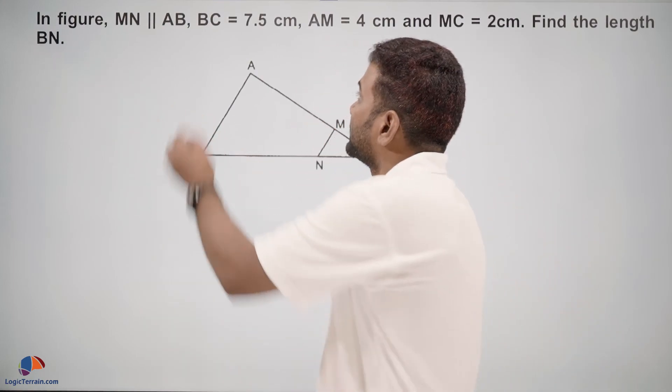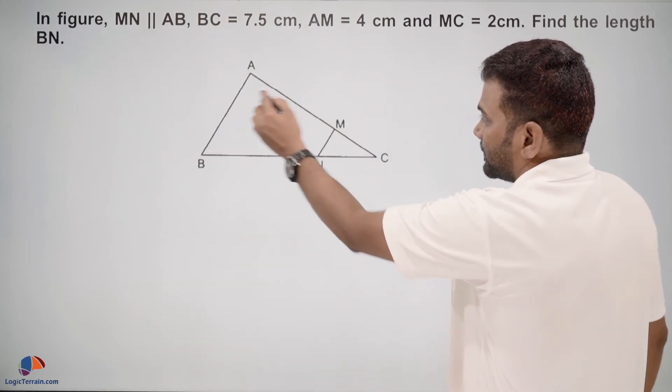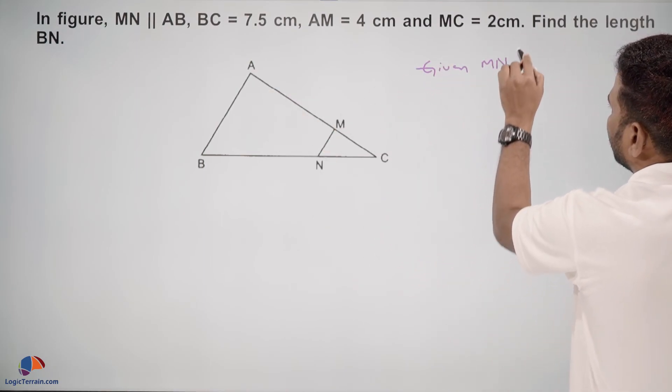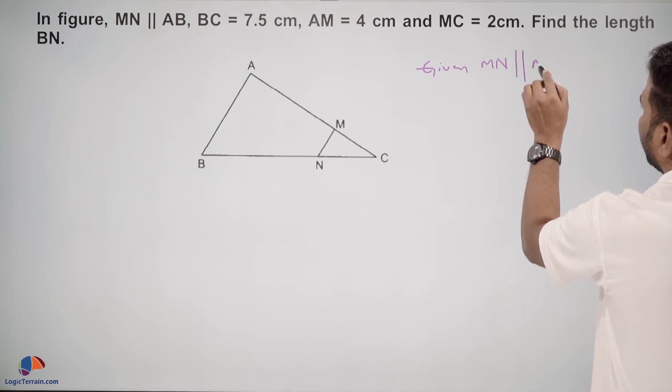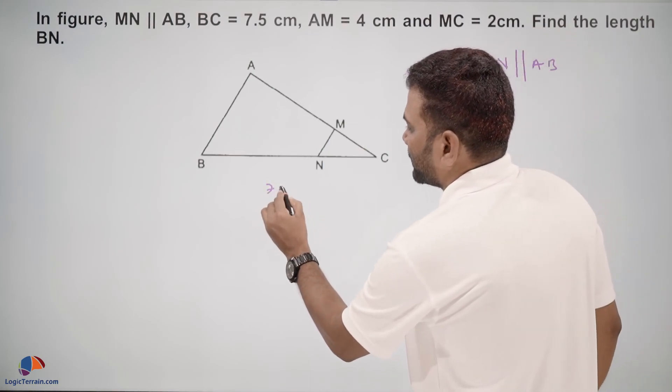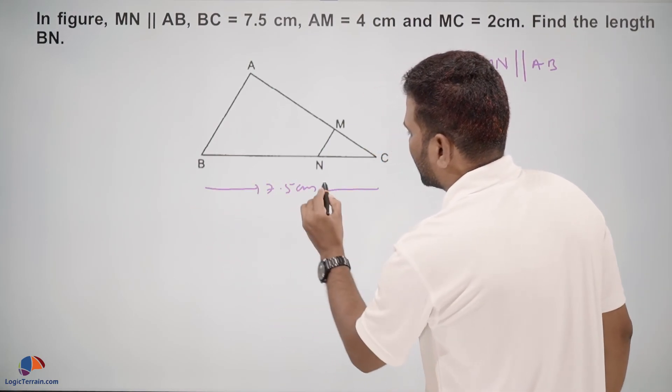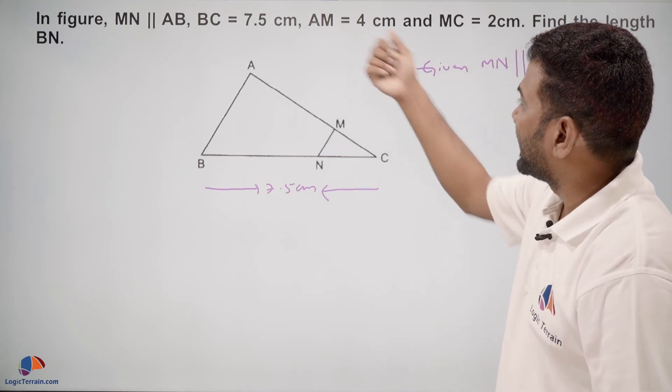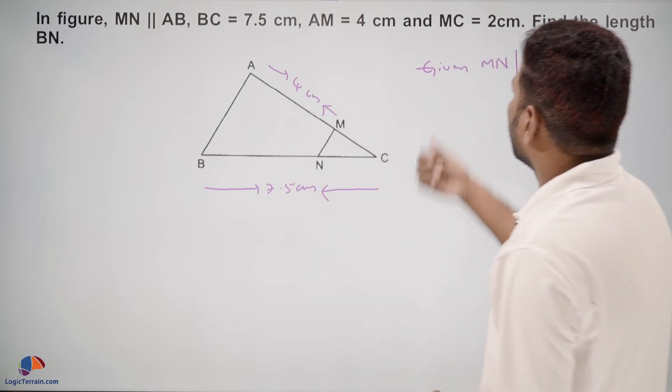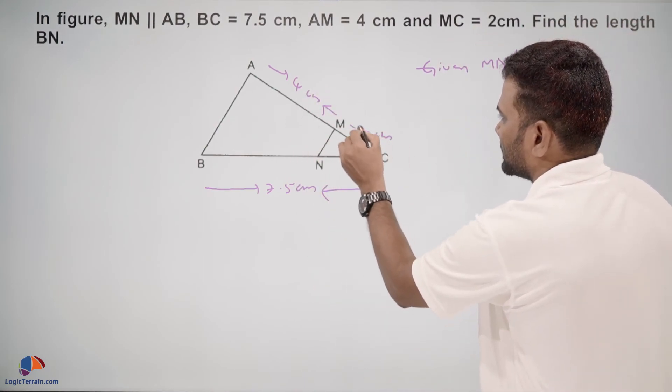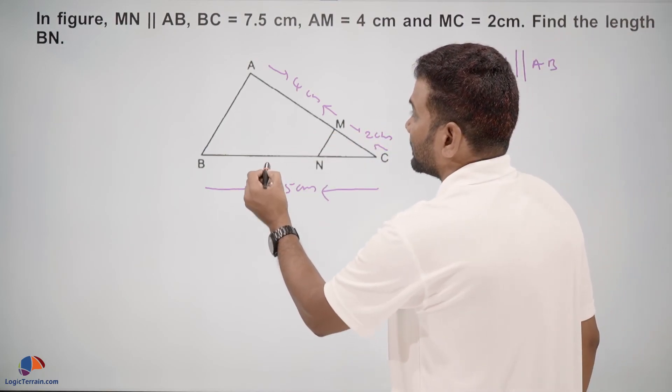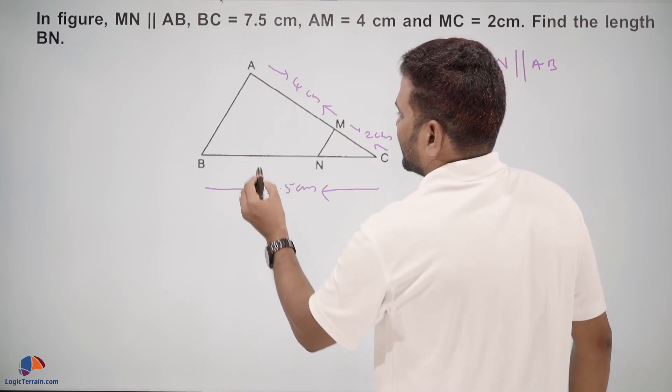So we are given that MN is parallel to AB. BC is 7.5 cm for the whole length, AM is 4 cm, and MC is 2 cm. We need to find the length of BN.